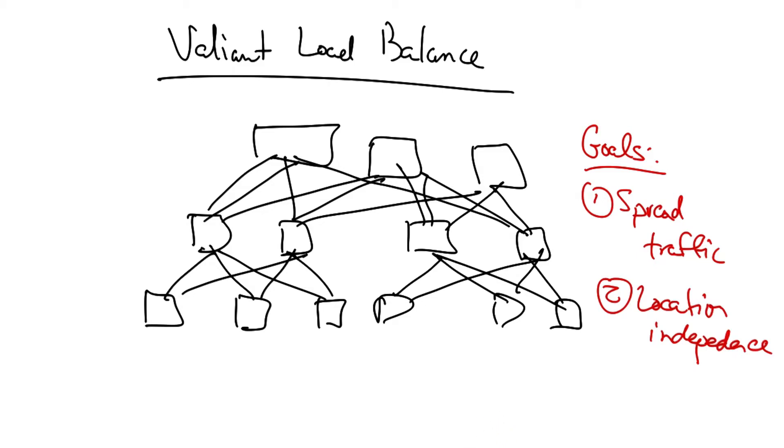The goals of Valiant load balancing in the VL2 network are to spread traffic evenly across the servers and to ensure that traffic load is balanced independently of the destinations of the traffic flows.